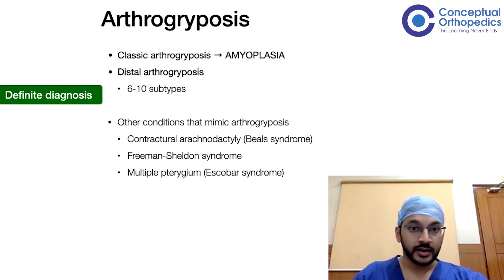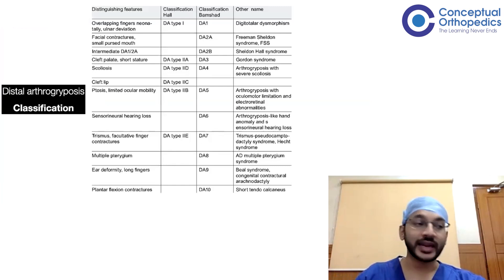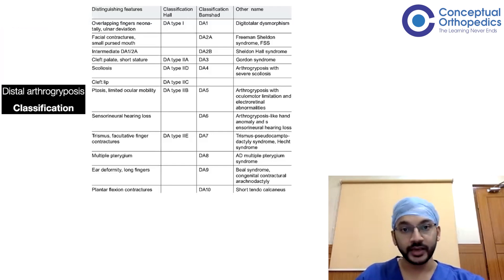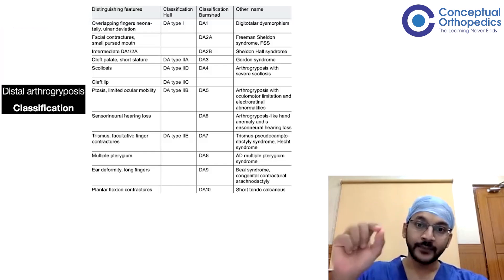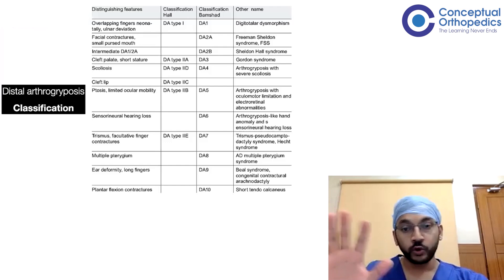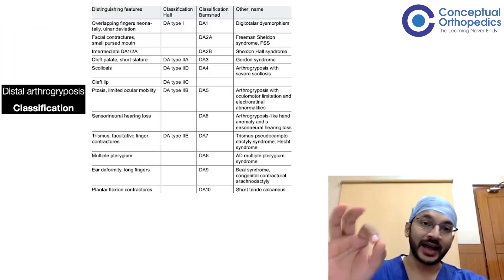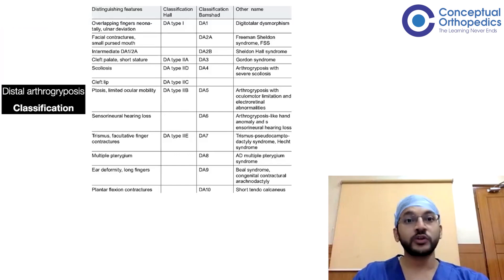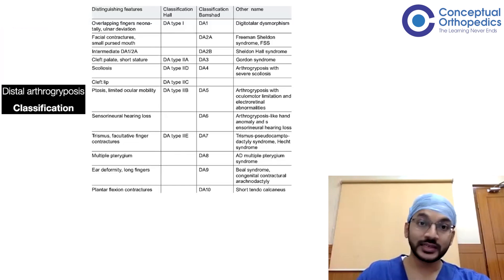Coming to distal arthrogryposis, there are six to ten different subtypes depending on which classification you use. A common classification used earlier is Hall's classification, which has six different subtypes — type one and type two, which is subdivided into five types. Do not focus on memorizing the subtypes; instead, look at the distinguishing features.